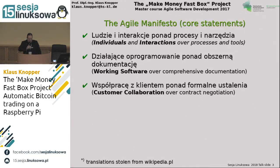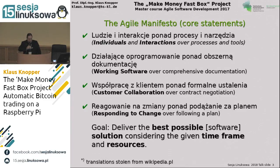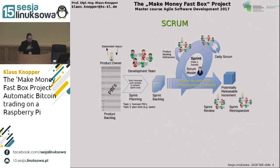Customer collaboration — especially with the product owner — is more important than strict contract negotiation. This is difficult for many companies who try to order software with an agile method, where we don't make a fixed plan at the beginning specifying exactly what the outcome will be. Also, responding to change is very important, and we had many changes during our project. The goal is always to deliver the best possible solution considering the given timeframe and resources.